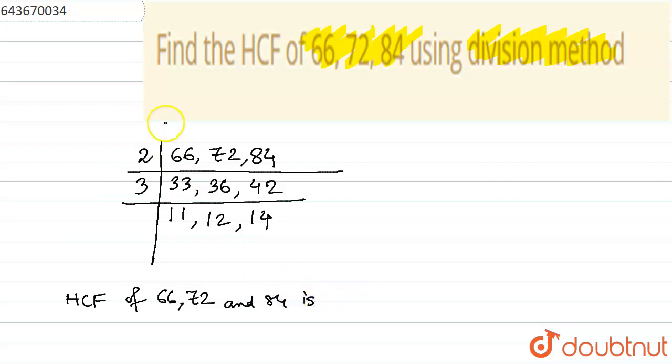what you have got, the common factors. You can see the 2 and 3, right? So we'll write the answer here as 2 into 3, that is 6. So 6 is the HCF of the required question and is the required solution to this question. Thank you for listening.